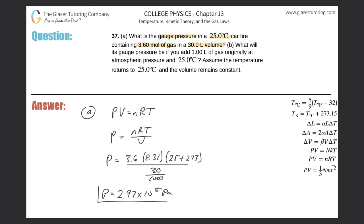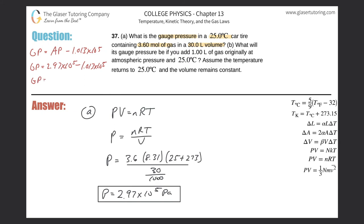That value is absolute pressure. To find gauge pressure, remember this formula: gauge pressure equals absolute pressure minus 1.013 × 10⁵. So gauge pressure = 2.97 × 10⁵ − 1.013 × 10⁵, which gives us 1.96 × 10⁵ pascals. That's the gauge pressure for letter A.